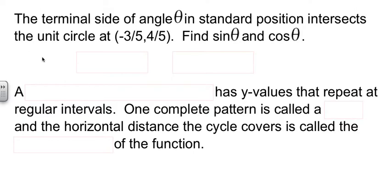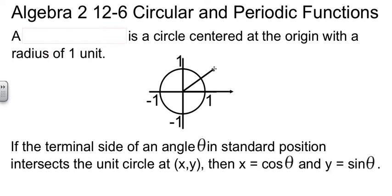For example, if our terminal side of our angle intersects the circle at (-3/5, 4/5), I'm going to jump back over here. That'll be somewhere over in here. The point where it crosses there - that's what they're talking about. Those coordinates are (-3/5, 4/5).